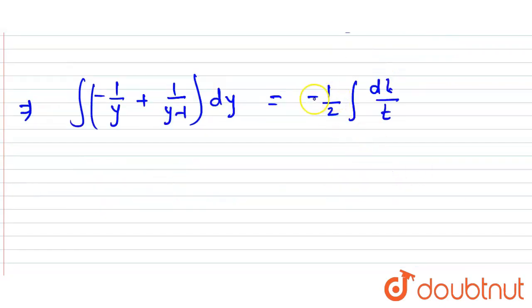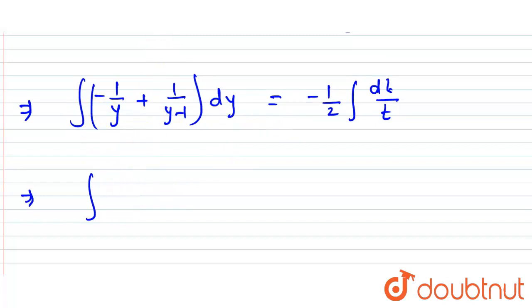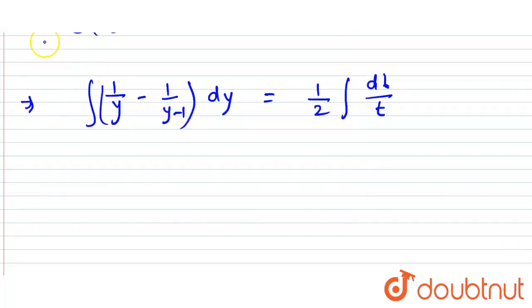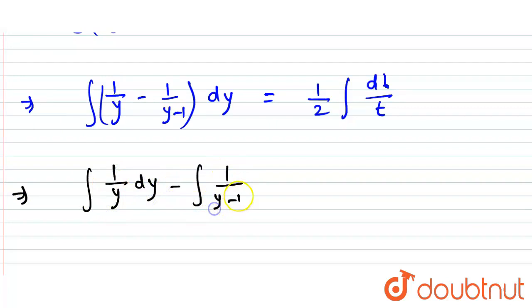Now taking the minus sign to the other side, the expression becomes the integral of [1/y - 1/(y - 1)] dy equals ½ · integral of dt/t.